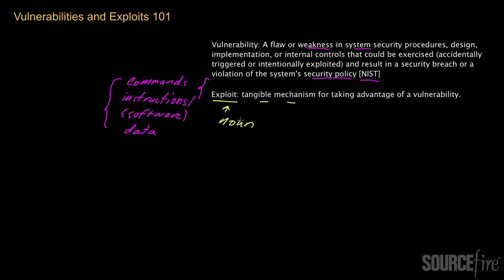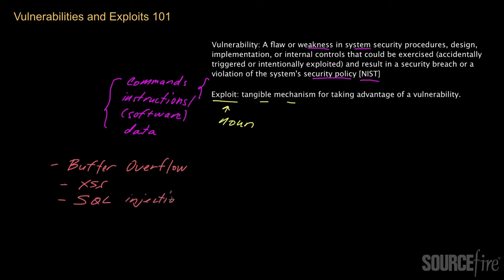There are different kinds of vulnerabilities. Some common ones include buffer overflow, which is one of the more popular ones. Another type is cross-site scripting, often abbreviated as XSS. These are two of the most common vulnerabilities. Another common vulnerability, especially in the context of web applications, is SQL injection. Cross-site scripting and SQL injections are both commonly seen in web applications.